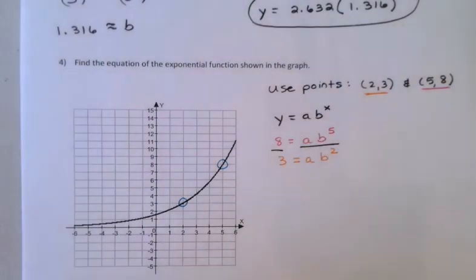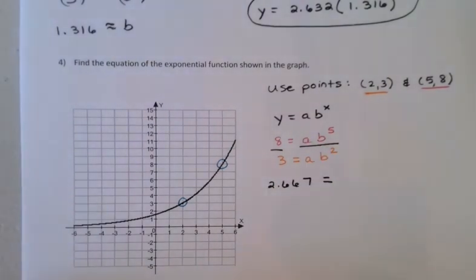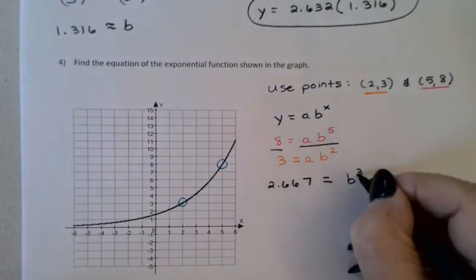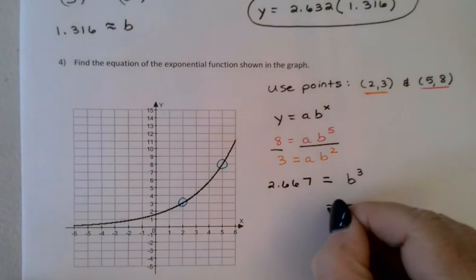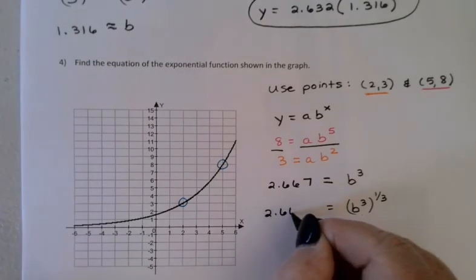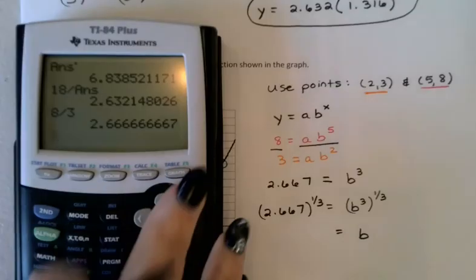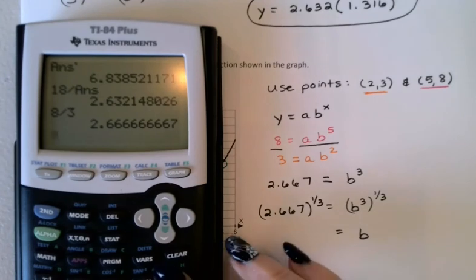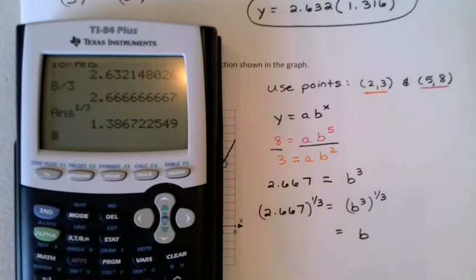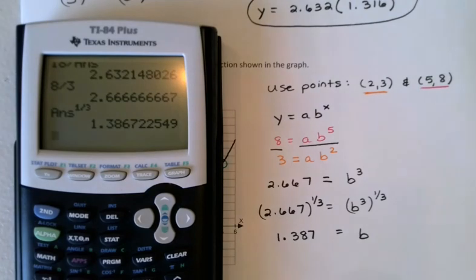I'll divide my equations. And 8/3. Again, I'll keep it in my calculator, but it's about 2.667. a divided by a is 1. And subtracting those exponents, I get b cubed. I'll need to raise that to the one-third power to get just b to the first. And I'll do the same thing on the left-hand side, raise it to the one-third power. So I keep all the decimal places the calculator had, raised to the one-third power, and I get about 1.387. If I round to three decimal places for the b.